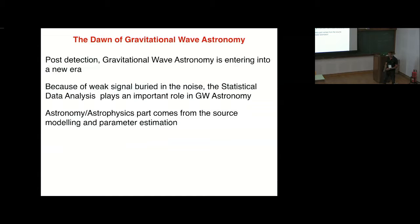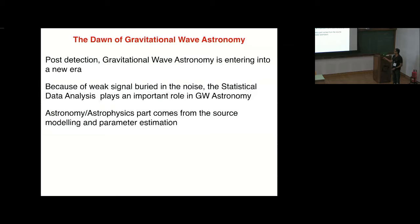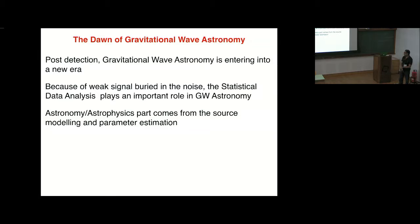Post-detection, gravitational wave astronomy is entering a new era. What we have is a very weak signal buried in noise, which makes data analysis an important part of gravitational wave astronomy. Astronomy and astrophysics essentially need source modeling and parameter estimation, which tells whether the model constructed for the source is right and tells us more about astrophysics.